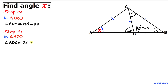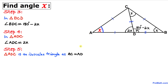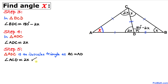So angle ADC turns out to be 2X. Now let's focus on triangle ADC again. We know that triangle ADC is an isosceles triangle since side AC equals side AD. Therefore if angle ADC is 2X, angle ACD is going to be 2X as well.